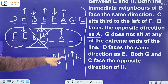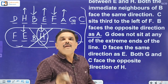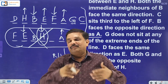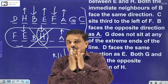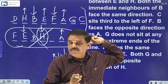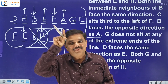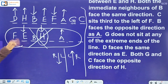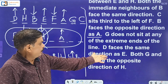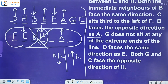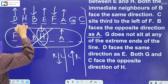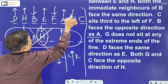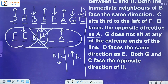Positions are now all confirmed. Directions confirmed so far: H, B, E, F, and A. We still need to determine directions for G, C, and D using remaining clues. Next: D faces the same direction as E — direct information, so D's direction is confirmed. Then: both G and C face the opposite direction of H. H is facing south, so G and C must face north. That completes all directions.